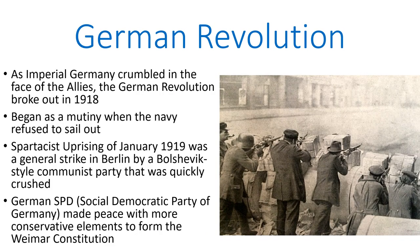In 1918, as Germany was in the midst of losing the war, the German Revolution broke out. This effectively started out as a mutiny when the navy refused to sail out to challenge the British fleet again, and then spread across society. People demanded that the war be brought to an end and they were tired of the fighting. This culminated in the so-called Spartacist uprising of January 1919, which was a general strike in Berlin by a Bolshevik-style communist party. While this uprising lasted for perhaps a week, this was never a major threat, and as far as general strikes go, it was quite unsuccessful since it did not shut down the city.